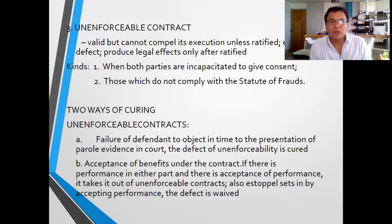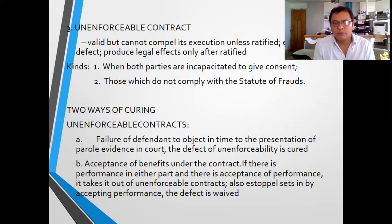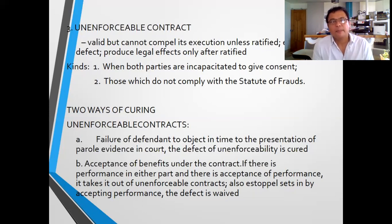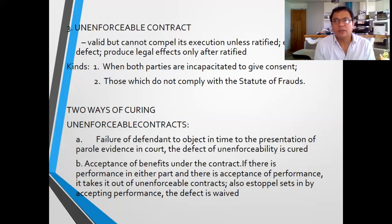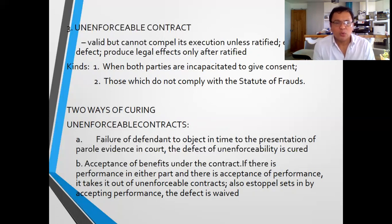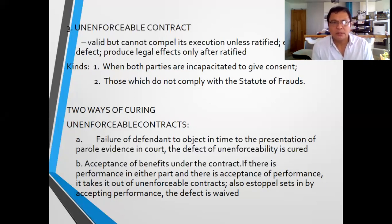There are two kinds of unenforceable contracts. First, when both parties are incapacitated to give consent — both the seller and the buyer are incapacitated, for example both are insane. Unlike in voidable contracts where only one party is incapacitated, here in unenforceable contracts both parties are incapacitated. Number two: those which do not comply with the Statute of Frauds — meaning those not complying with required forms, such as contracts that must be in a public instrument or must be in writing. If they do not comply, then the contract is unenforceable. For instance, if you sell real property without executing a public instrument, that sale is unenforceable.